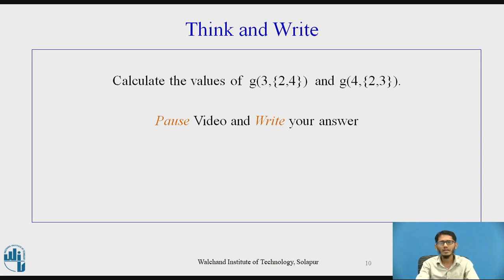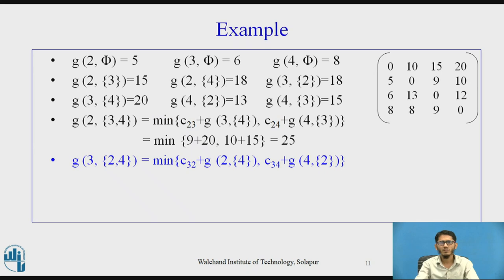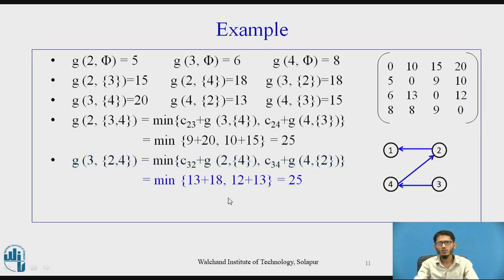Students are expected to calculate g(3, {2,4}) and g(4, {2,3}). Pause the video and write your answer. The solution: g(3, {2,4}) = minimum of [c_32 + g(2, {4}), c_34 + g(4, {2})] = minimum of [13 + 18, 12 + 13] = 25. This comes from c_34 + g(4, {2}), giving the path 3 to 4, 4 to 2, and 2 to 1, with length 25.